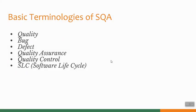To know about SQA, first of all we need to discuss about some basic terminologies related to SQA. According to ISO 9000, quality is the degree to which a component meets the requirements of the customer at the start of its life. From this definition, it is clear to us that quality is the first requirement of a client or a user.